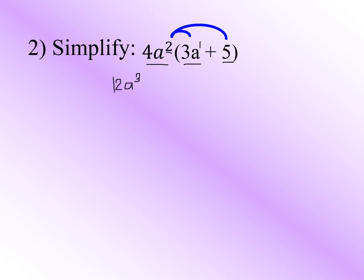Next, multiply 4a² by positive 5. Copy the operation addition, then 4 times 5 gives us 20. Since 5 has no variable, just copy a². So our answer is 12a³ plus 20a².